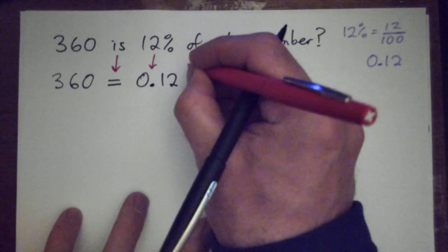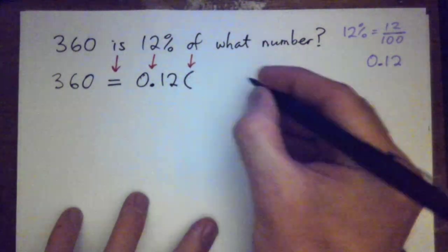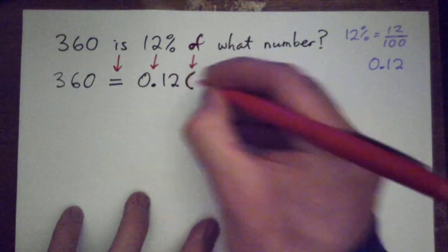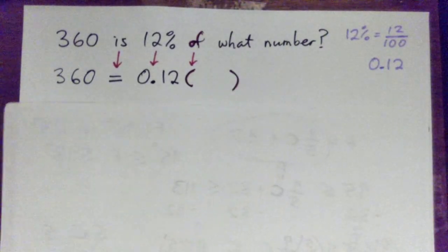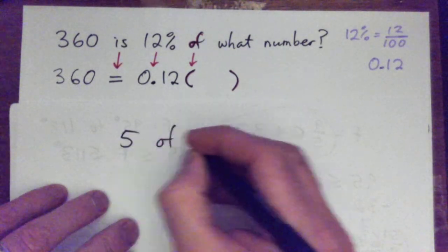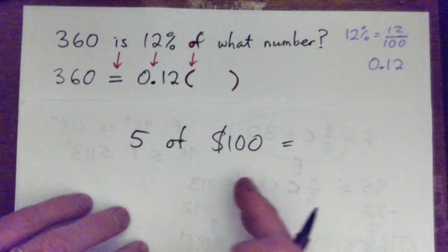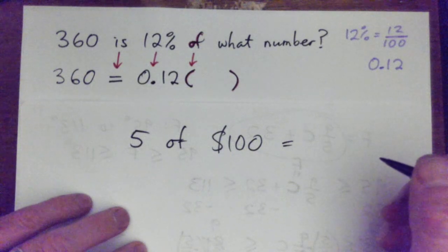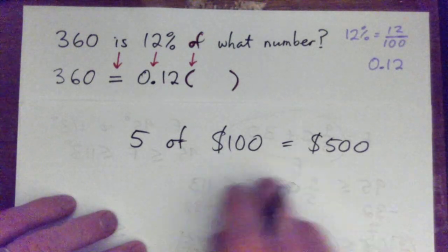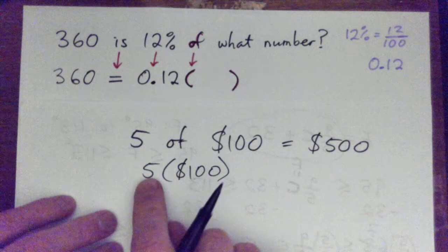And then we do 'of'. What does 'of' mean in math? 'Of' is actually multiply. It's kind of weird - 'of' means multiply. Let me try to explain that slightly. If I said I've got five of those $100 bills, what would that be? What's five of those $100 bills? Wouldn't that be $500, right?